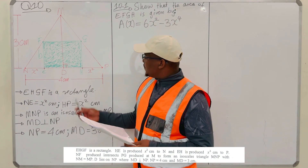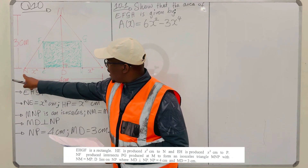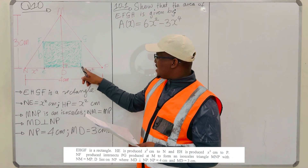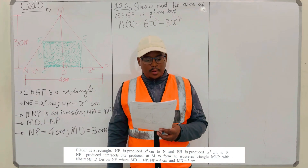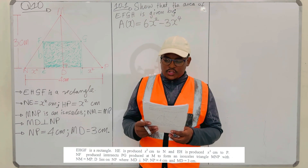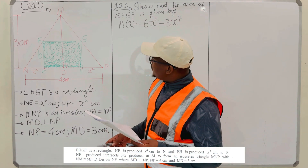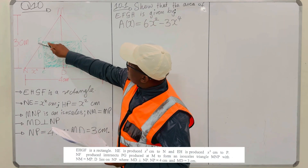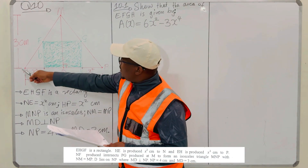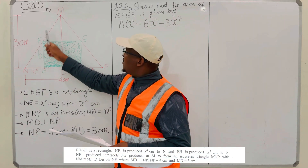They are saying HE is extended X squared centimetres, so the distance from E to N is X squared. At the same time, the distance from E to H has been extended X squared centimetres to P. They are saying NF produced intersects PG at M to form an isosceles triangle MNP, with NM equal to MP. So NF is extended to meet PG at M — PG and NF intersect at M.